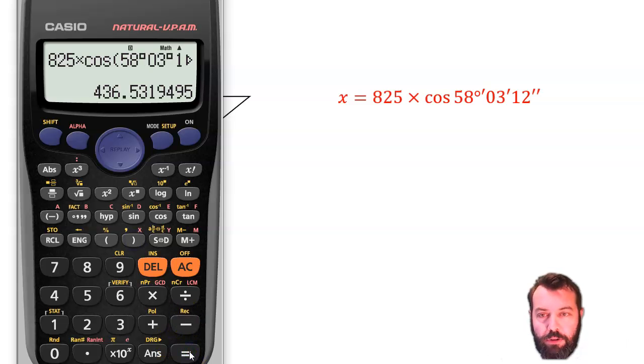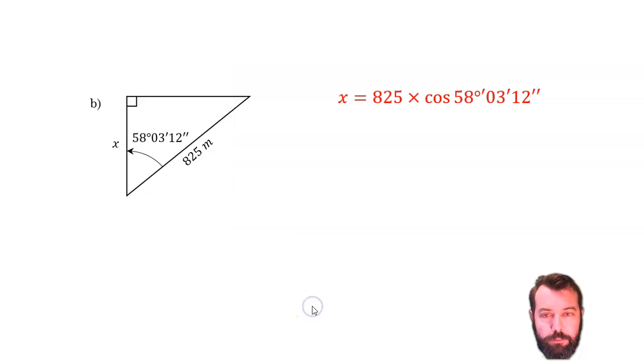And we have 436.5 metres. There we go. 436.5. So that's using sine and cos to find either the opposite or the adjacent using an angle and the hypotenuse.